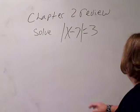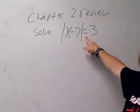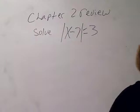All right, still chapter 2 review, asking you to solve the absolute value equation. It's an equation because it's got an equal sign. Absolute value of x minus 7 equals 3. Solve for x, go.